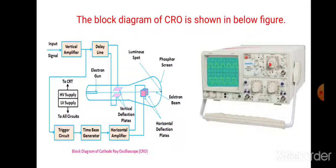This is the main functioning of the block diagram and its parts. The block diagram of the basic CRO consists of the vertical amplifier, delay line, trigger circuit, time-based generator, horizontal amplifier, cathode ray tube, and power supply. You have to write these main parts in the block diagram of the CRO. This is a very important question: what is CRO, write the block diagram, and explain the block diagram of the CRO.